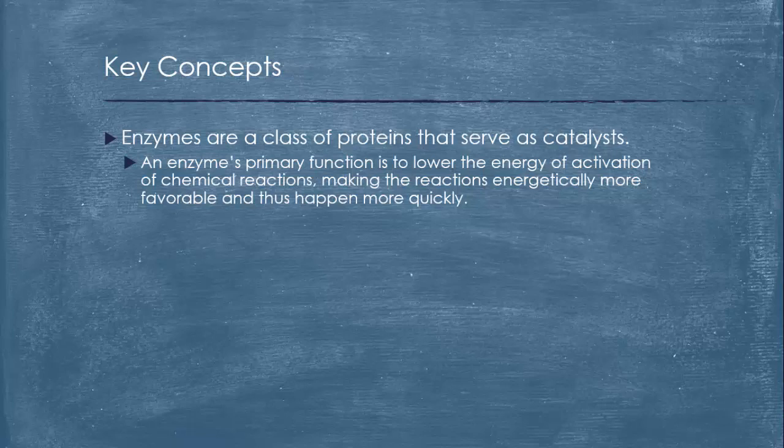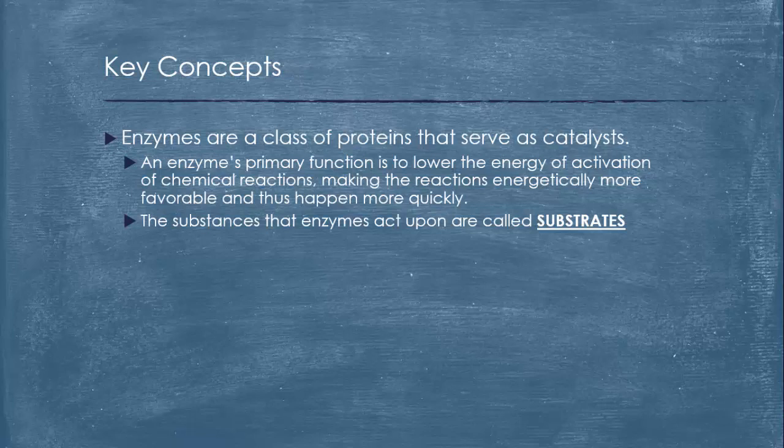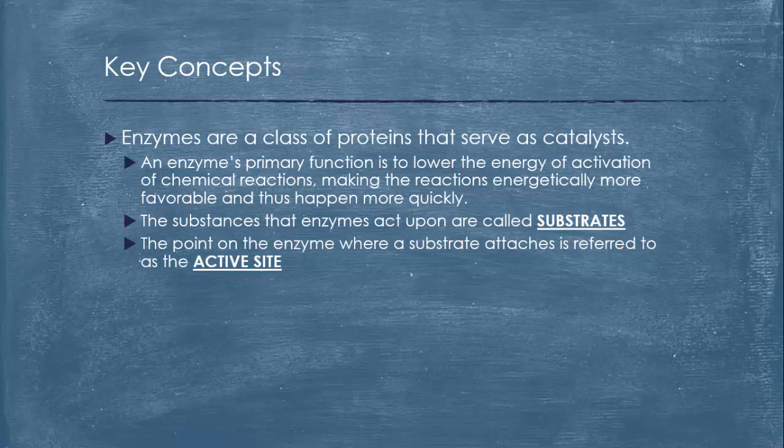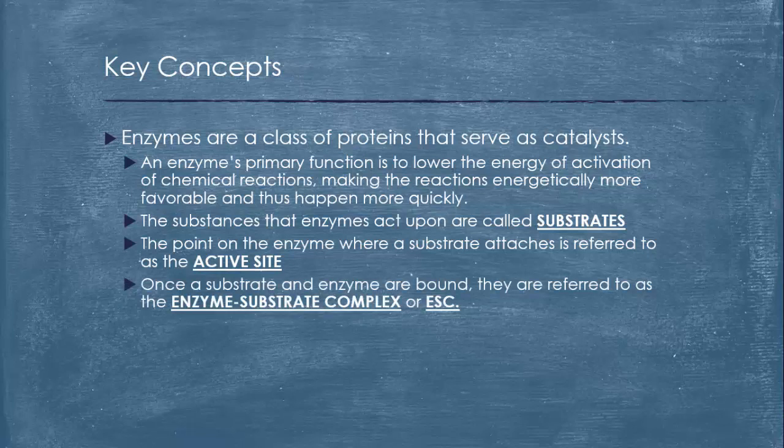An enzyme's primary function is to lower the energy of activation of chemical reactions, making the reactions energetically more favorable and thus happen more quickly. The substances that enzymes act upon are called substrates. The point on the enzyme where a substrate attaches is referred to as the active site. Once a substrate and enzyme are bound, they are referred to as the enzyme substrate complex or the ESC.